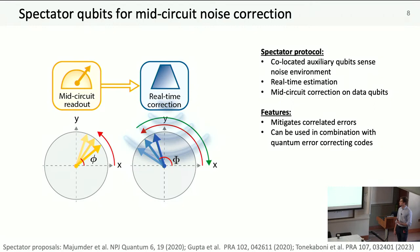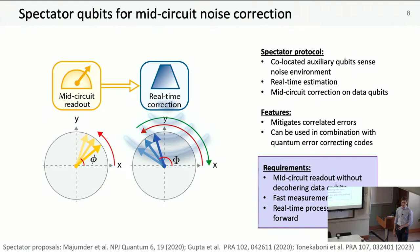This is the key idea behind spectator protocols. We have co-located auxiliary qubits that sense a noise environment, do real-time phase estimation, then a mid-circuit correction. This is particularly for correlated errors. A nice thing is that it doesn't need two qubit gates. But there are stringent requirements: mid-circuit measurements without decohering data qubits, measurements fast compared to intrinsic dephasing timescales, and capability for real-time data processing and feed-forward operations.